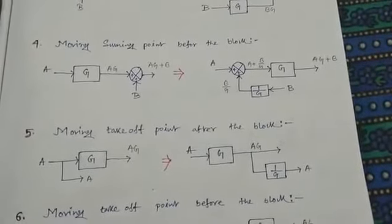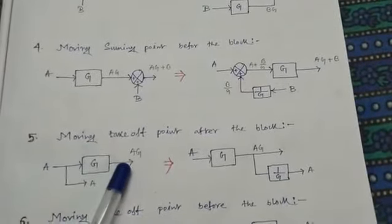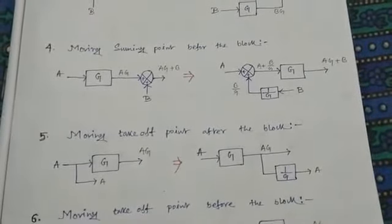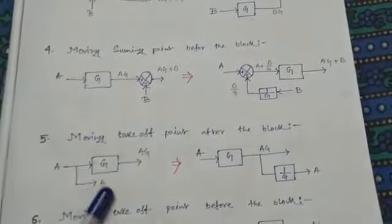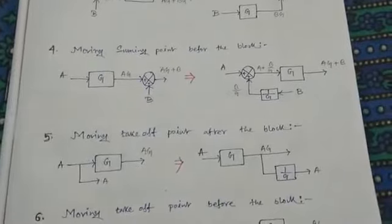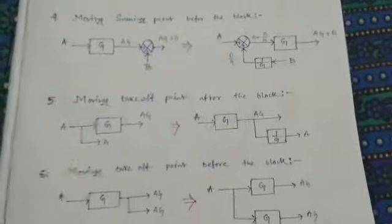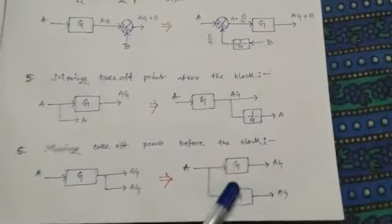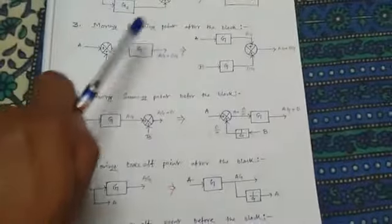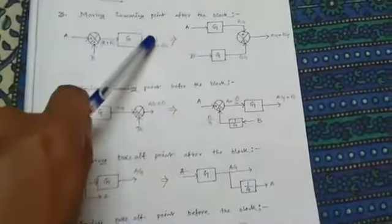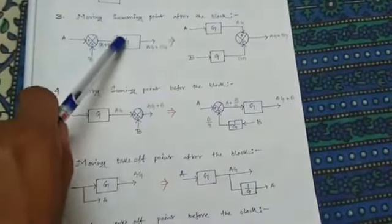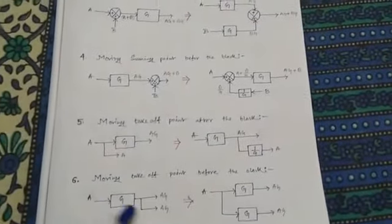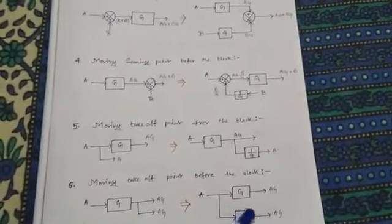Rule number five: moving a takeoff point after the block. If we want to move the takeoff point after the block, we have to multiply the takeoff signal a by 1/g — that is, we divide the signal by the system gain. Moving a takeoff point before the block: in this case we have to multiply the signal by the system gain g.